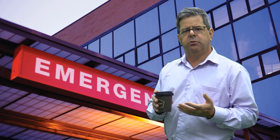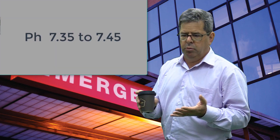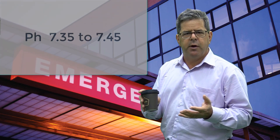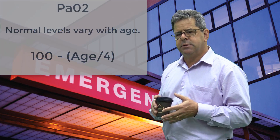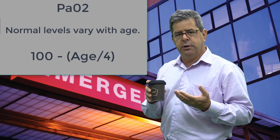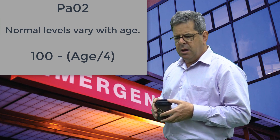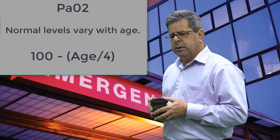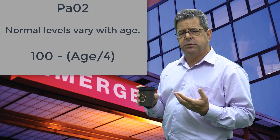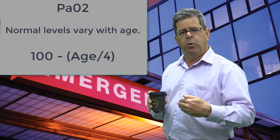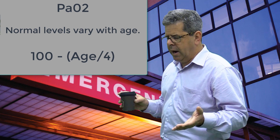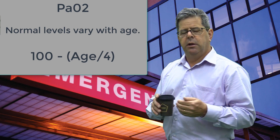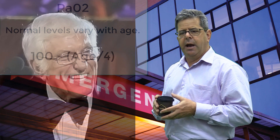So what do you measure in an arterial blood gas? You look at the pH — normal 7.35 to 7.45 — and the PaO2, that's the partial pressure of oxygen, the dissolved oxygen in the blood. The normal varies with age. One equation: divide your age by four and take that away from 100. So an 80-year-old: 80 ÷ 4 = 20, away from 100 = 80 — that should be the PaO2 for a healthy 80-year-old on room air (FiO2 0.21).